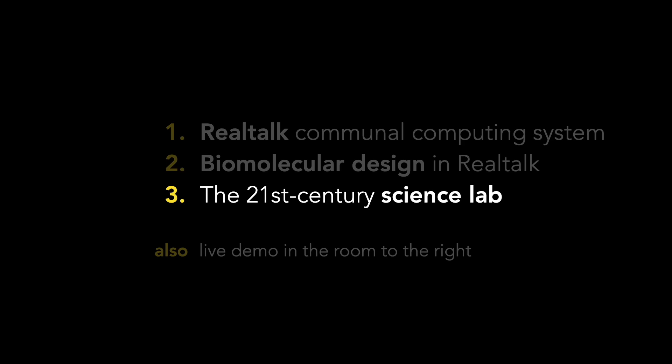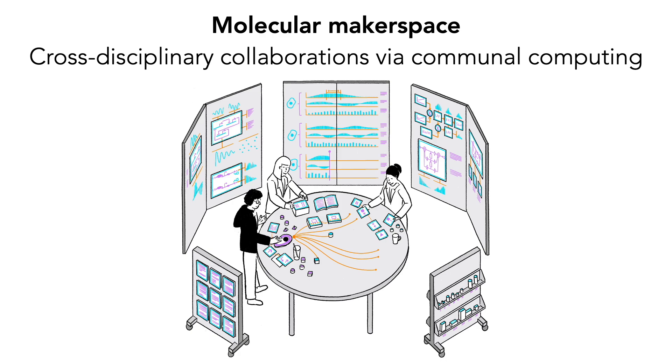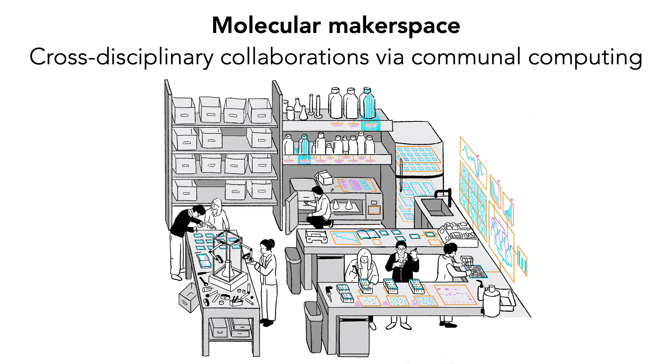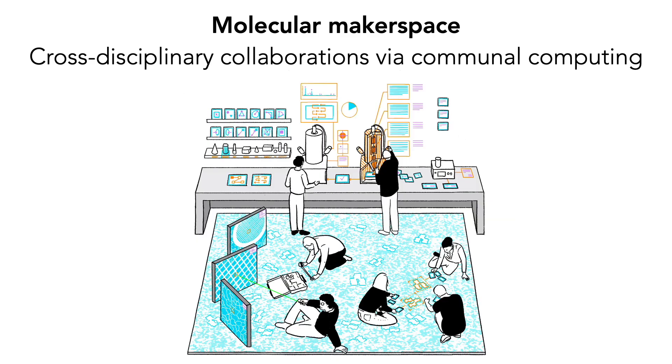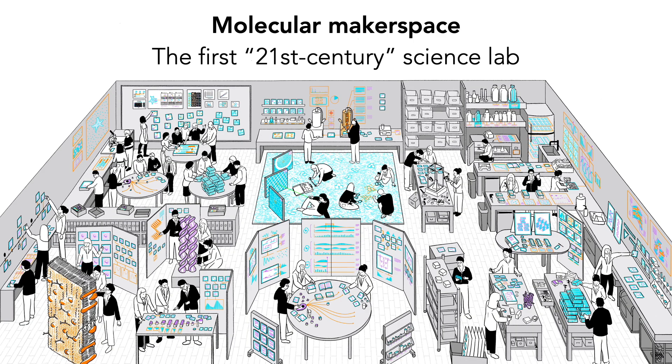What Sean and I saw from this prototyping experience was that communal computing could transform every part of the scientific process — from initial conception through experiments to preparing presentations and publications. Every part of that process just seemed right for being done communally. So we feel like the next step is to design a science lab entirely around working in this way, where a culture and community can grow. We think the best format for doing that is what we're calling a molecular maker space, where scientists from many different fields converge to collaborate on projects they otherwise could not do. We think a lab like this could be the seed of a 21st century way of doing science, and the community that forms around it will carry these practices gradually into common use. That's what we're trying to get off the ground right now, and we're looking for funding to make this a reality. Thank you.